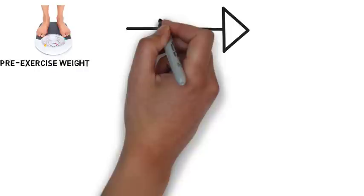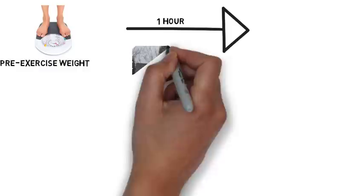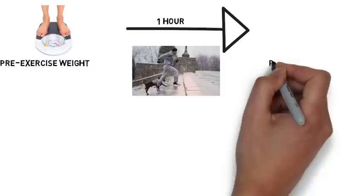Then, simply go out and exercise for an hour. However, if you were to consume any fluids during that time period, you need to record how much fluid was consumed. This will come into play later when calculating sweat rate.